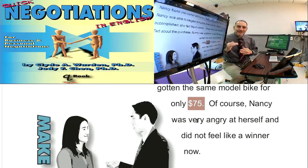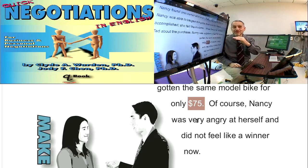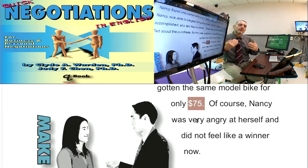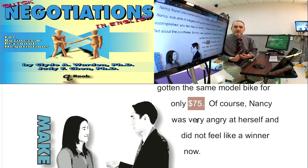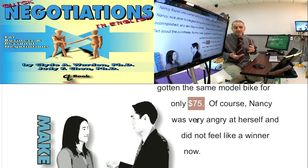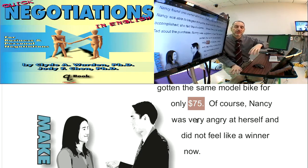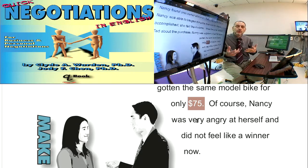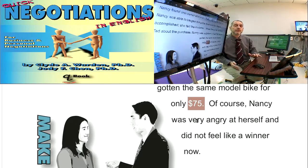She was thinking: $150, bargain, negotiate — $100 is better than $150, so I'm okay. But $75 is better than $100, so Ted did better. She's not thinking about what her goal was or what the value of this bike is to her. If you need the bicycle to commute to work every day, it's more valuable to you than to someone who just rides occasionally for fun. So your bicycle has more value, and you'd be willing to pay more for it.